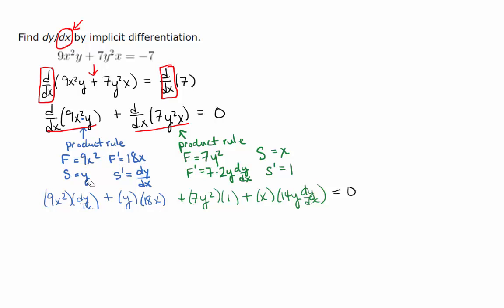But when you take the derivative of y with respect to x, you get dy dx. So that dy dx is going to show up. So we have here in our product rule, we have first times the derivative of the second, and then the second times the derivative of the first.